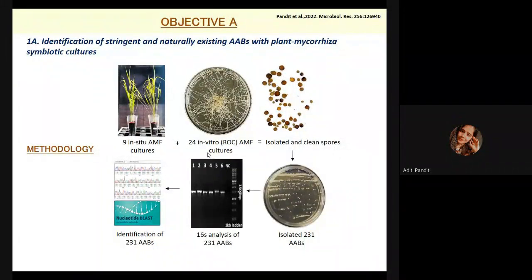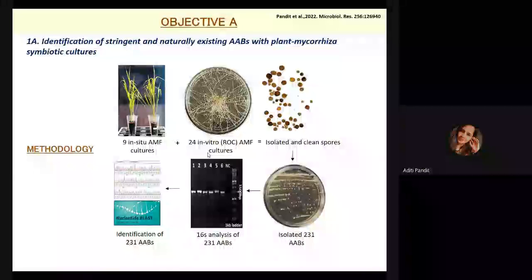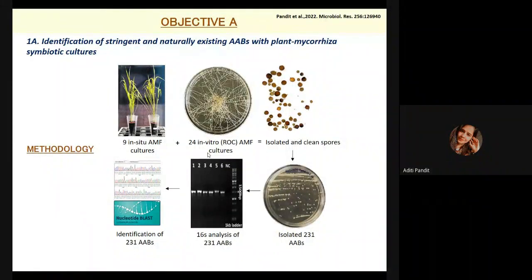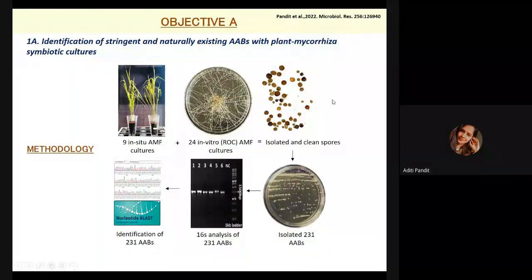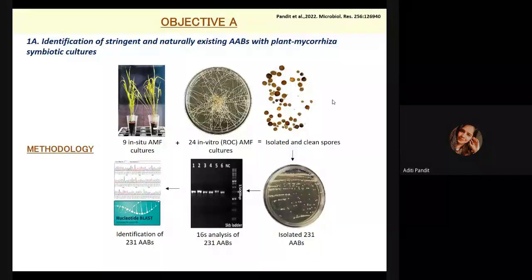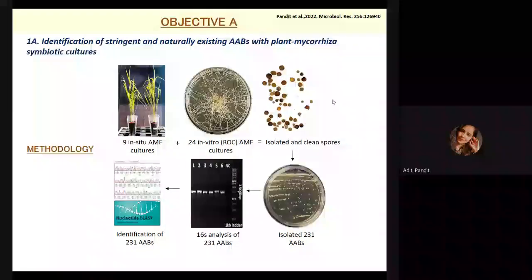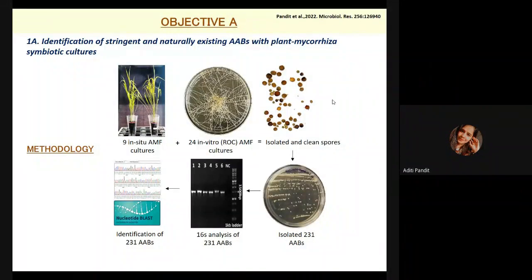Keeping all these hypotheses in mind, our first objective — which we published — was to screen, identify, and characterize bacteria associated with mycorrhizal fungi. I worked at TERI, the Energy and Resources Institute, with a campus in Gurgaon. So we took nine from in situ conditions and 24 from in vitro conditions — a total of 33 AMF cultures — and isolated spores. Cleaning of the spores was done for two main reasons: to remove soil debris or synthetic media attached to the spores, and to remove loosely attached bacteria, as we were focusing on stringently associated bacteria.